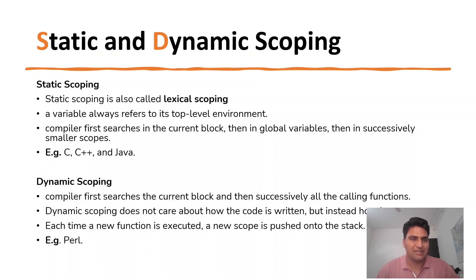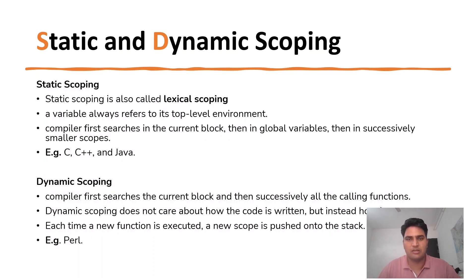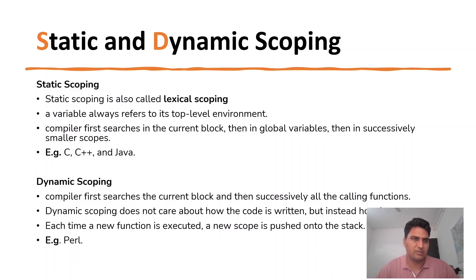So what does the compiler do? First, we search for that variable in the current block. If it is not in the current block, then we look for global variables, and then we look in the inner block. So this is static scoping.